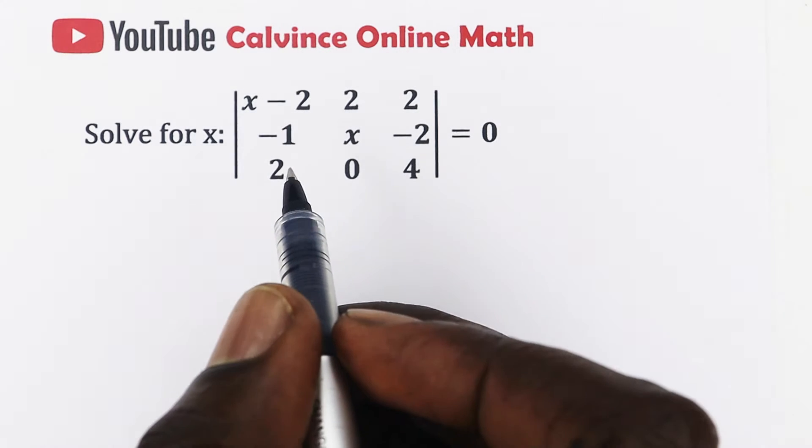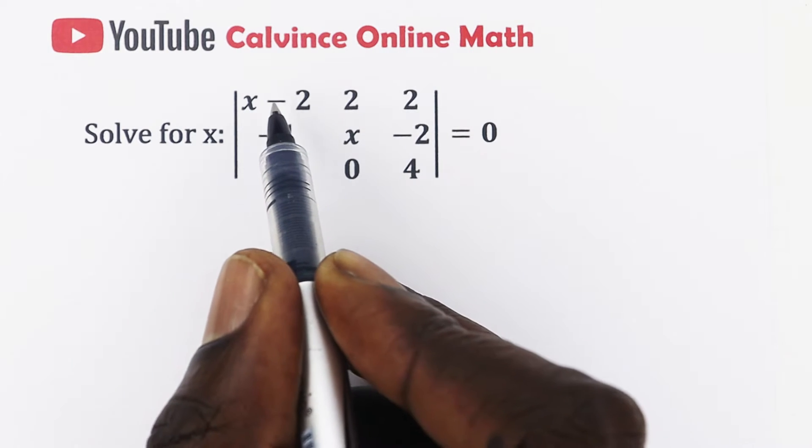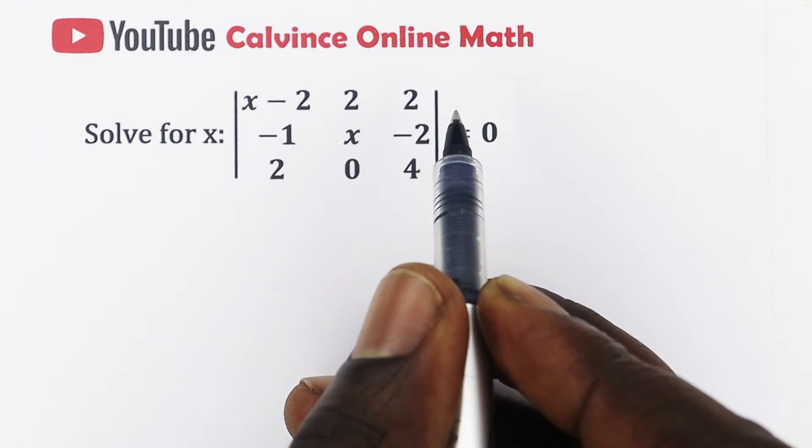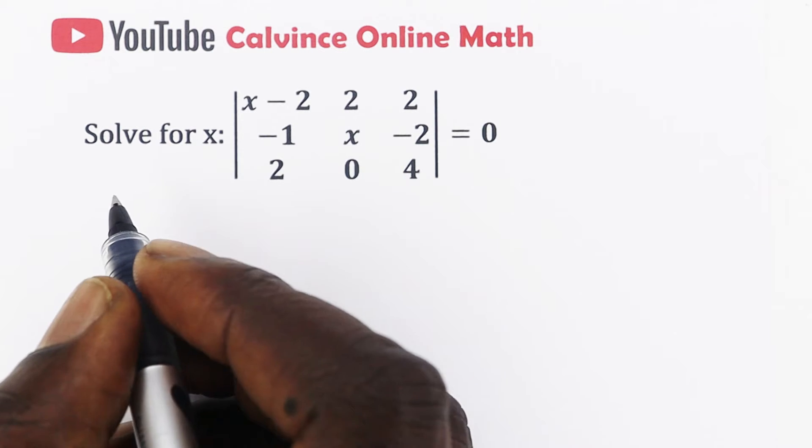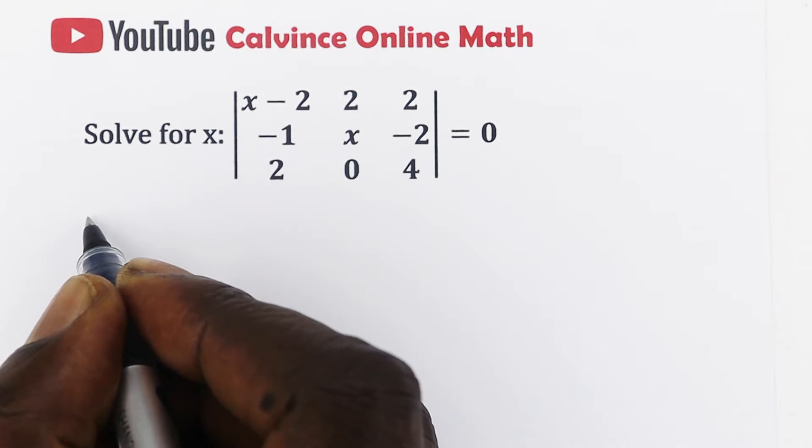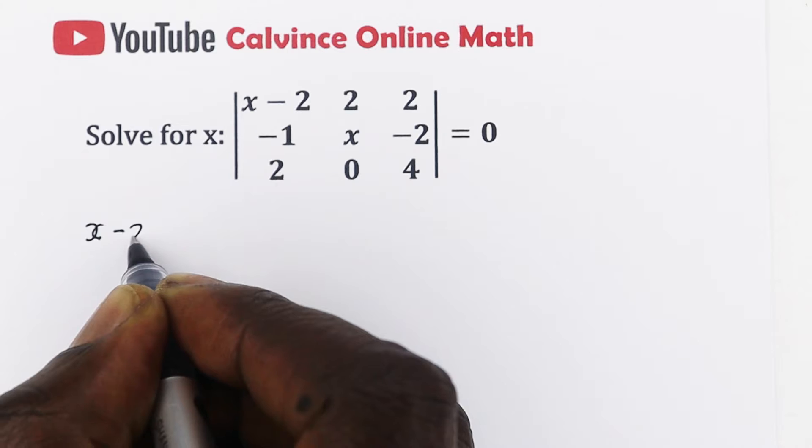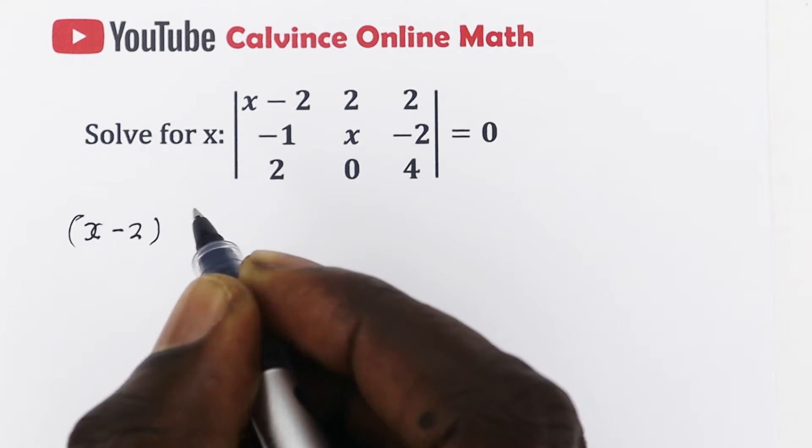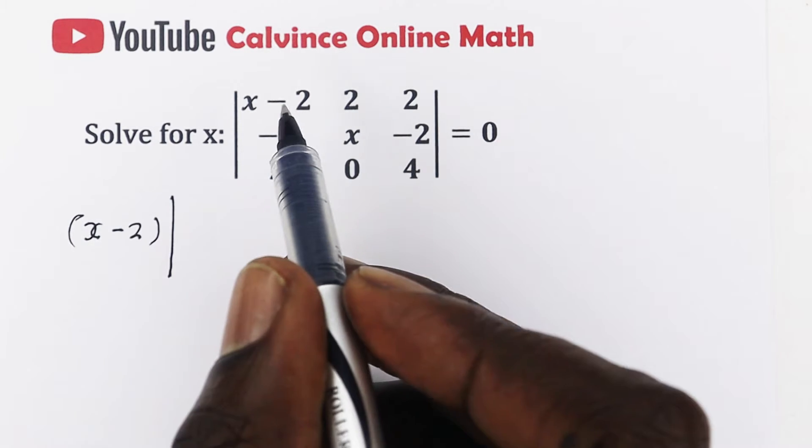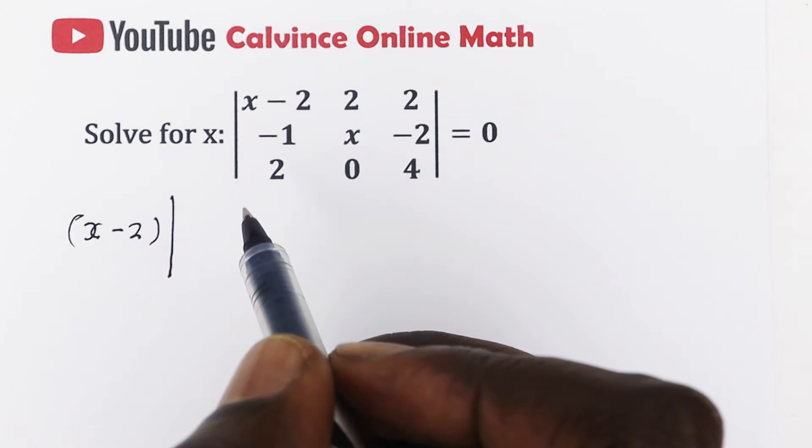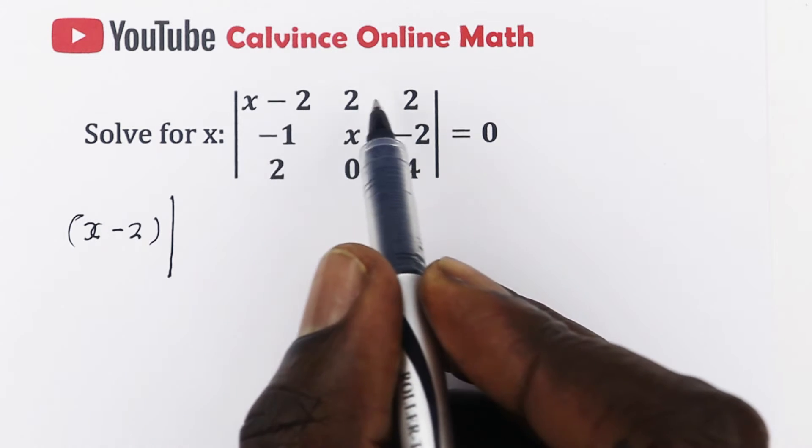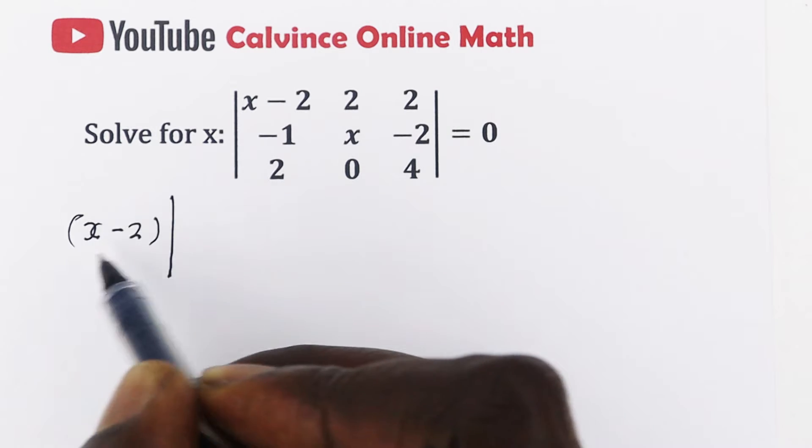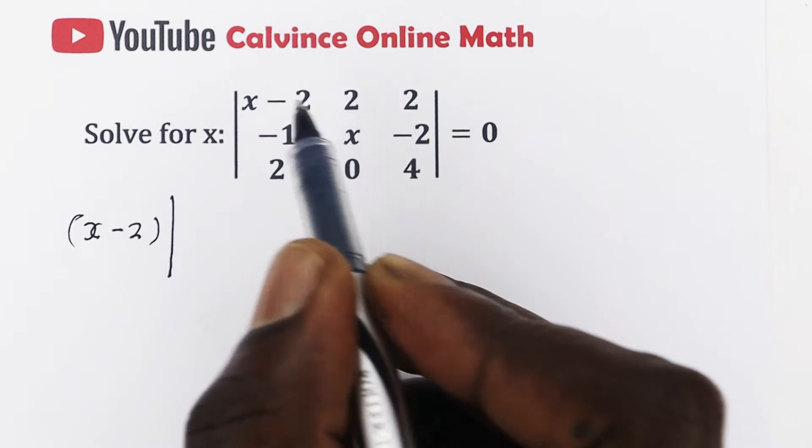To get the determinant of a 3 by 3, just consider the first row. You start by taking the first term or the first entry in that row. In this case, that is x minus 2. Then you multiply that by the determinant of the small matrix that is left when you cover the row and the column in which this is.